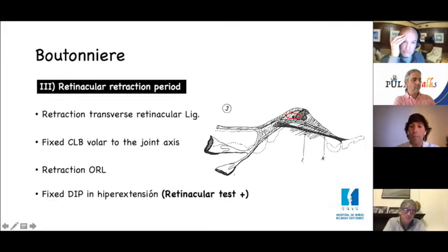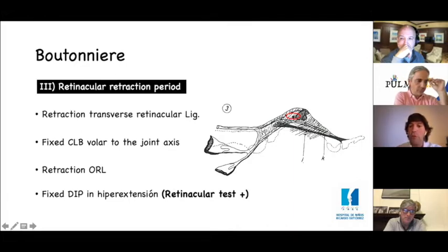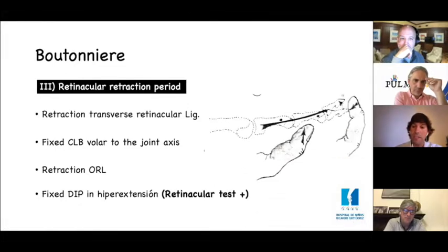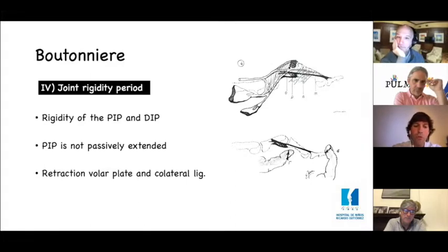In stage 2, the retinacular test of the oblique retinacular ligament is negative and we can flex the DIP. In stage 3, the retinacular test is positive due to retraction of the oblique retinacular ligament with DIP hyperextension, and the conjoined lateral bands are fixed below the axis of rotation due to retraction of the transverse retinacular ligament. Stage 4 is a rigid deformity with a non-reducible contracture due to contraction of the palmar plate and collateral ligaments.